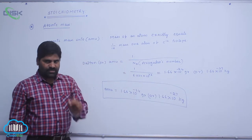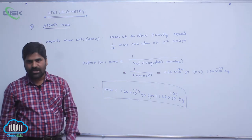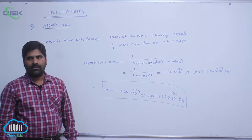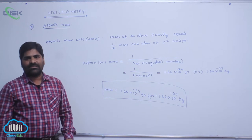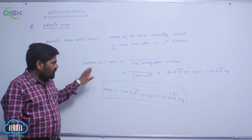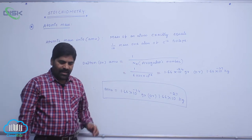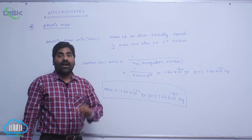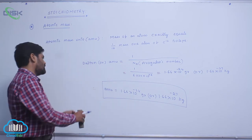So this covers the first topic: atomic mass definition, average atomic mass, and 1 amu. Next one is gram atomic mass.